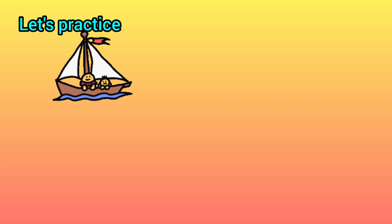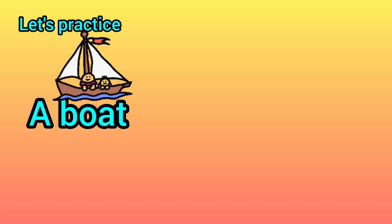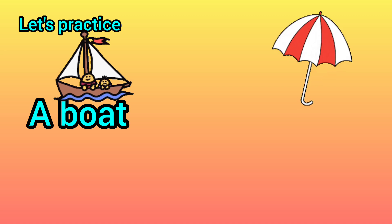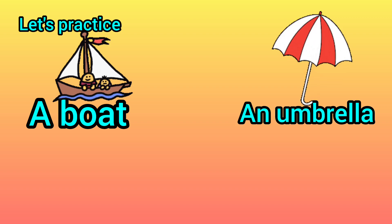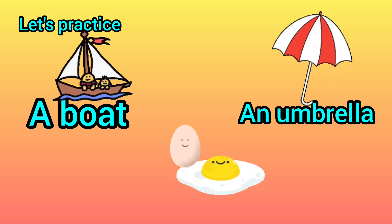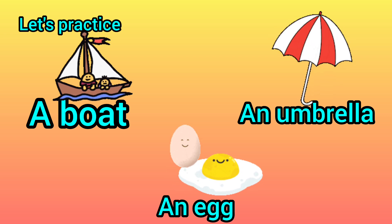Let's practice. What is this? This is a boat. B is a consonant, so we will use A. A boat. What is this? An umbrella. U is a vowel, so we will use AN. An umbrella. What is this? An egg. E is a vowel, so we will use AN. An egg.